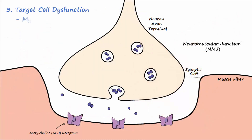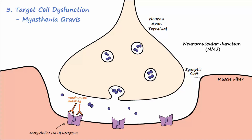Myasthenia gravis is another instance of target cell dysfunction. Autoimmune antibodies may be produced that cause problems at the neuromuscular junctions. The antibodies either block or destroy acetylcholine receptors. These actions limit communication between the neuron and skeletal muscles, and patients usually present with muscle weakness, often initially manifesting as droopy eyelids.